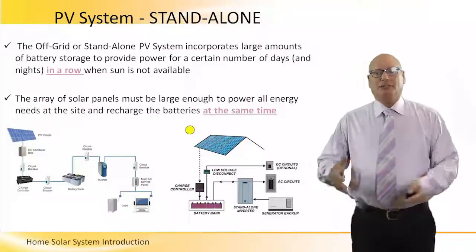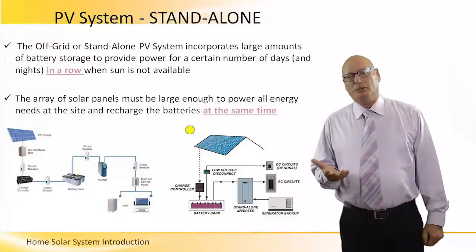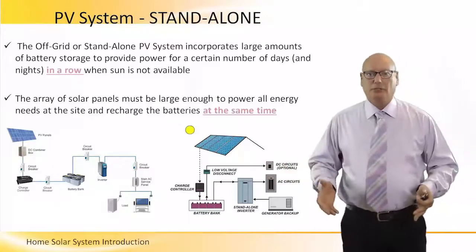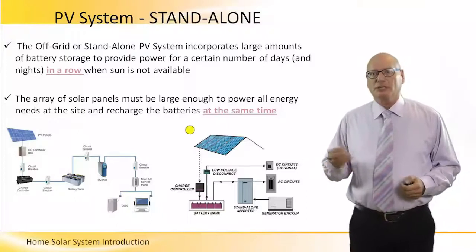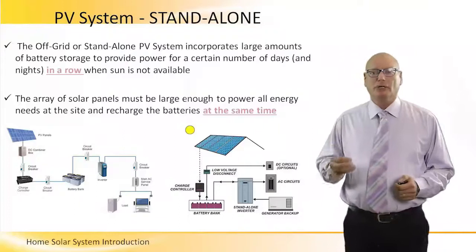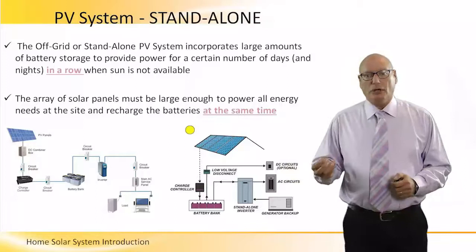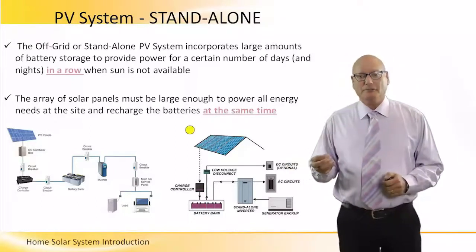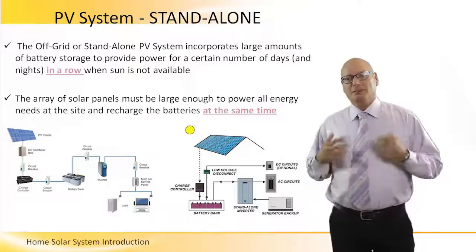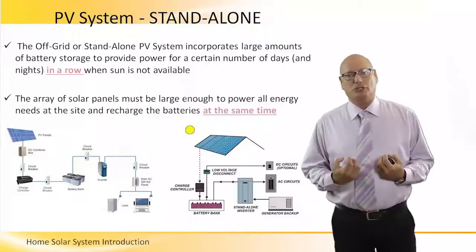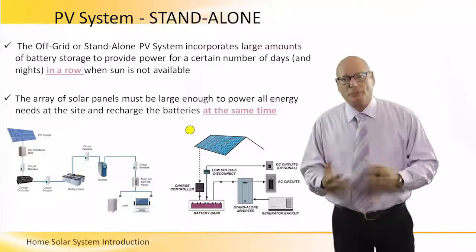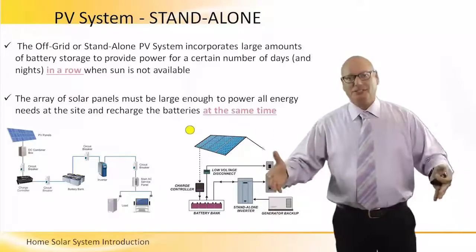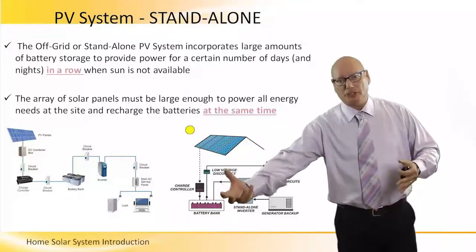Now we move from grid-tie systems with battery backup to stand-alone PV systems, which do not connect to the grid at all. Off-grid or stand-alone PV systems incorporate a large amount of battery storage to provide power for a certain number of days and nights when the sun is not available. The array of solar panels must be large enough to power all the energy needs at the site and recharge the batteries at the same time. As I supply energy to the appliances the battery gets discharged, so I have to charge it again to prolong the operating time of the PV system.